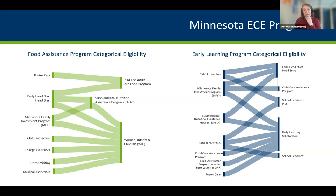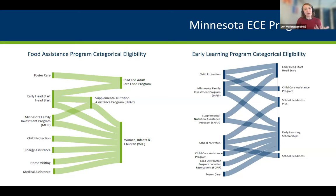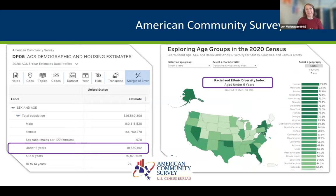One program we had a particular interest in working with was Head Start and Early Head Start. They were reluctant to share their data with our longitudinal data system for a number of reasons. In an effort to woo them over to the ECLDS, we were trying to find ways to help them find the data they need — specifically more detailed information about children under the age of six for their community assessment. We needed to help them find more detailed information about babies, toddlers, and preschoolers in Minnesota as well as their families.